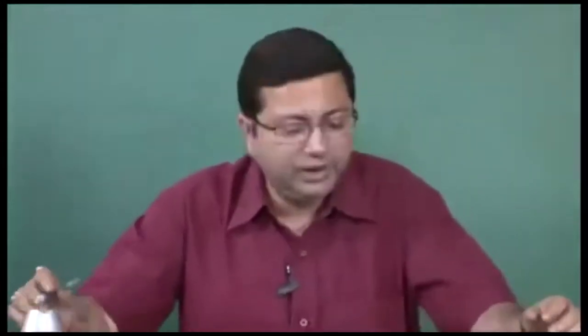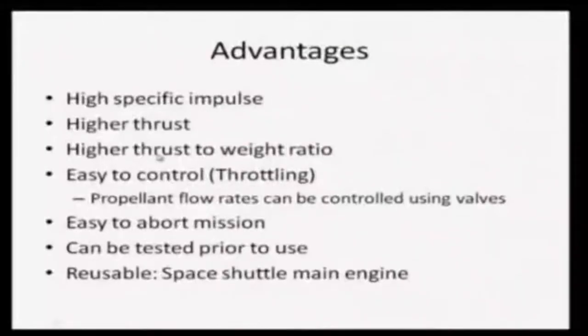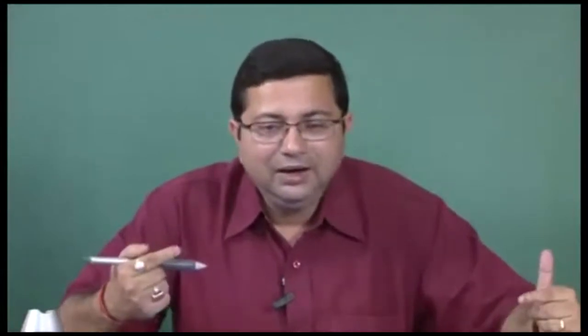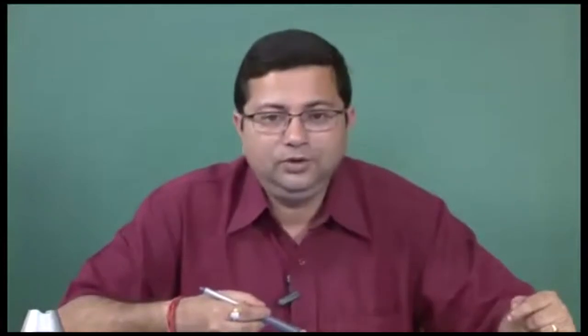What are the advantages of a liquid propellant rocket? First, its high specific impulse compared to solid rockets — going up to as much as 450 seconds. They also have fairly high thrust due to high energy density of liquid propellants, giving a high thrust-to-weight ratio. The biggest advantage is easy throttling — we can control both the fuel and oxidizer flow rates using control valves. This gives control over the entire heat release rate, and it is very easy to abort the engine by simply cutting off fuel supply.